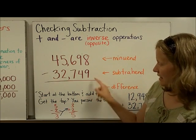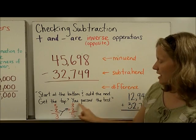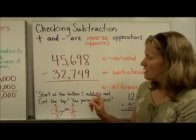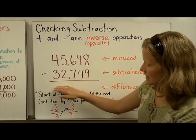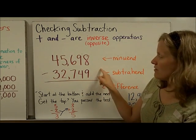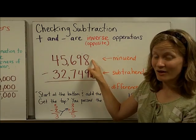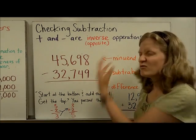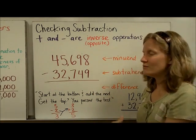So here's a little rhyme that I came up with that might help you. Start at the bottom and add the next. Get to the top. You pass the test. So what that means is we're going to get an answer. And then we are going to add it to the subtrahend. And if we get the number that we started with, then we know that we got it correct. So let's go through all those steps. We'll do the subtraction and then we'll do the checking too.